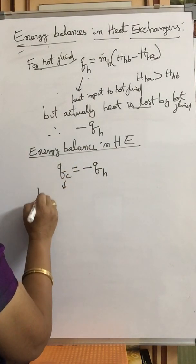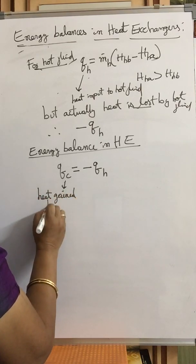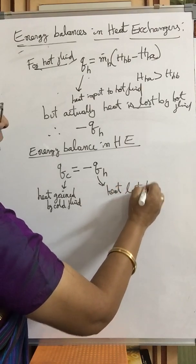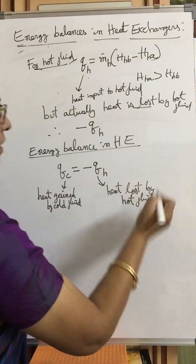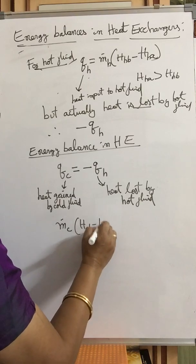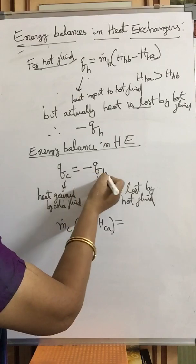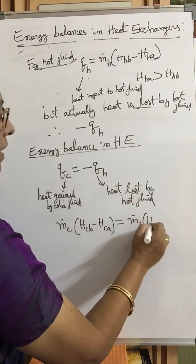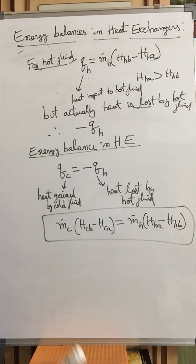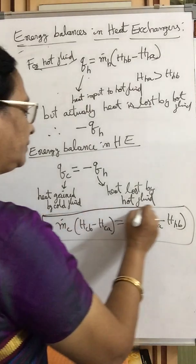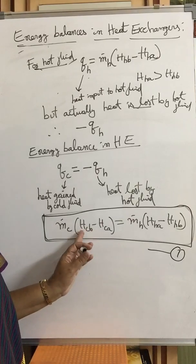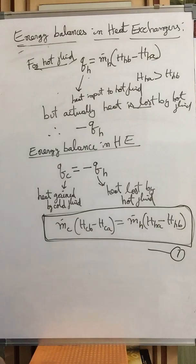So the energy balance in a heat exchanger is: QC equals minus QH. That is, heat gained by cold fluid equals heat lost by hot fluid. Written out fully: Ṁ dot C into (HCB minus HCA) equals Ṁ dot H into (HHA minus HHB). This is equation 1 — the energy balance in terms of enthalpies.